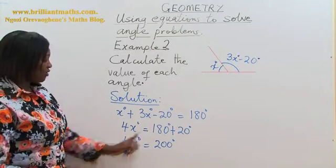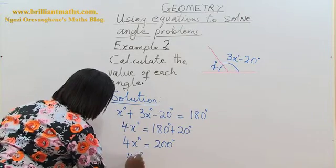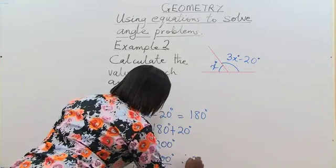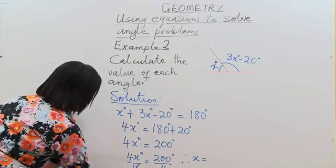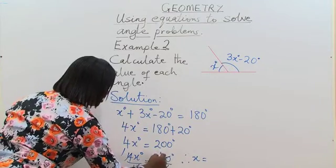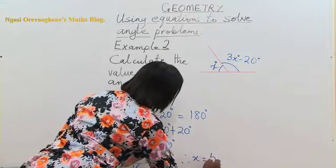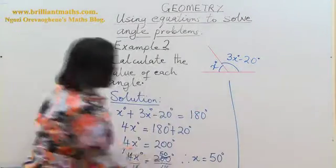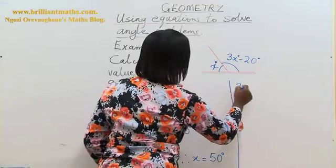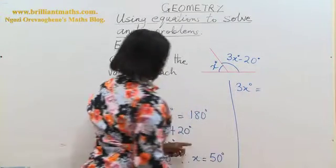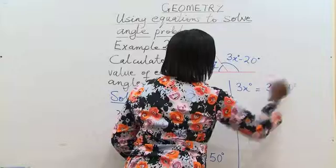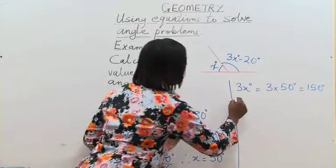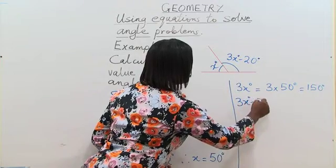So to find the value of x, we divide both sides by 4. So 4x over 4 is equal to 200 over 4. Therefore, x is equal to, 4 cancels and gives us 1, 4 into 20 is 5 into 200 is 50. So x is equal to 50 degrees. Since we have found that x is equal to 50 degrees, that means 3x degrees is equal to 3 times 50 degrees. And that gives us 150 degrees. So the value of the second angle is 3x minus 20 degrees. And that's equal to 150 degrees minus 20 degrees. So the second angle is 130 degrees.